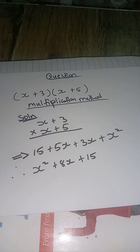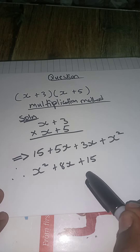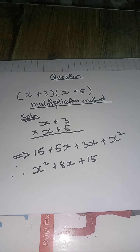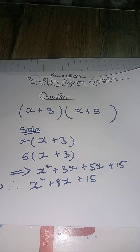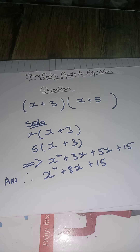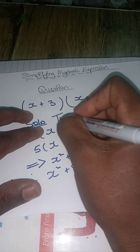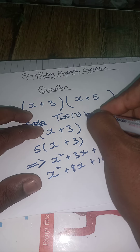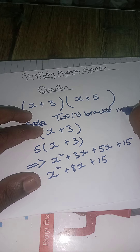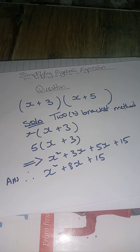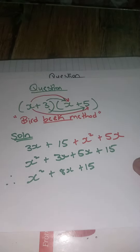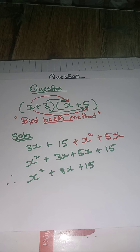So you just have to choose which one of the methods you are more comfortable with — whether the multiplication method, the two bracket method, or the bird beak method. Choose the one you are most comfortable with.